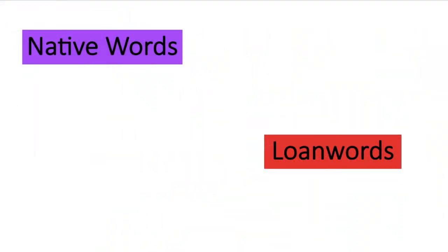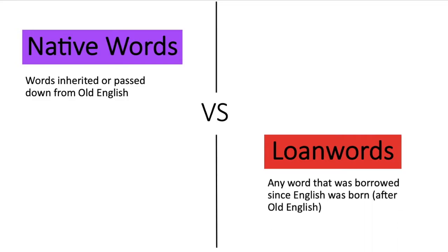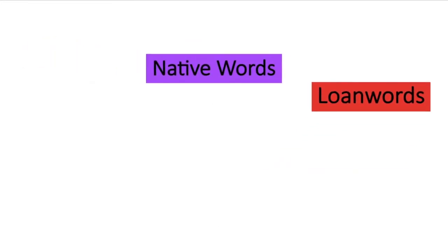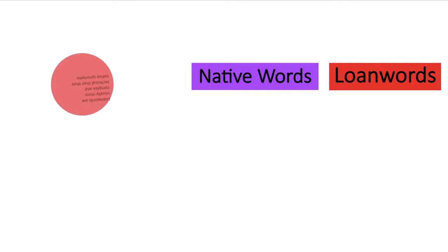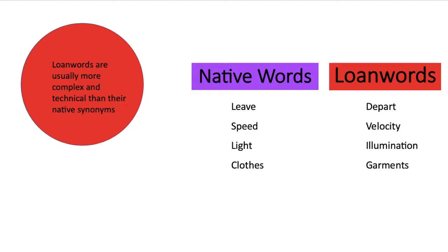But before we do that, let's think about native words and loan words. What's the difference? A native word is a word inherited or passed down from Old English, but a loan word is any word that was borrowed since English was born, which is after Old English. Loan words tend to be more complex and technical than their native synonyms — like leave and depart, speed and velocity, light and illumination, and clothes and garments.